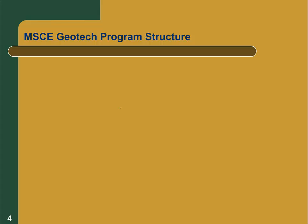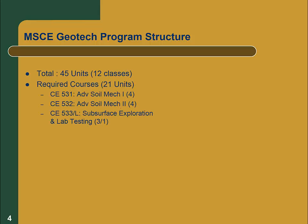The master's program here is a total of 45 units — 12 classes — broken into required classes and electives. The required classes fall into two categories. The first group is the 530 sequence: CE 531, 532, and 533, which are our main introductory classes. CE 531 and 532 are advanced soil mechanics classes, and 533 is a laboratory class. These are prerequisites for a number of the graduate classes in our program.